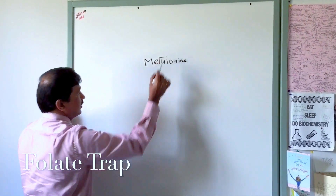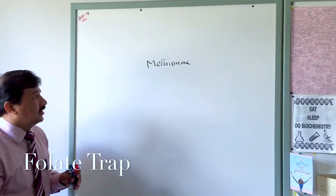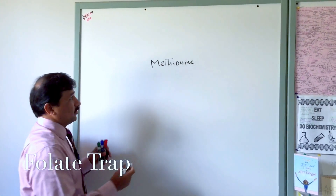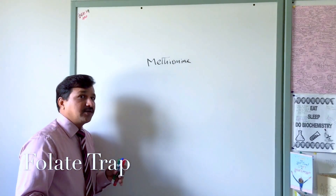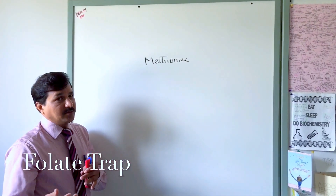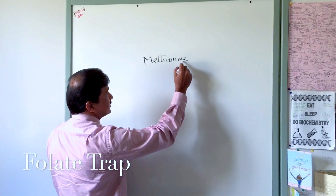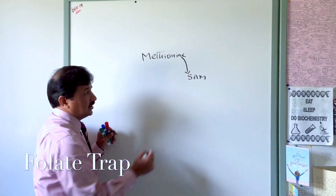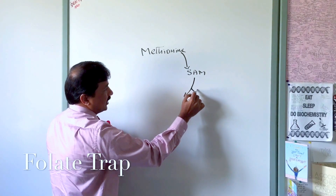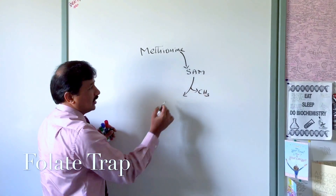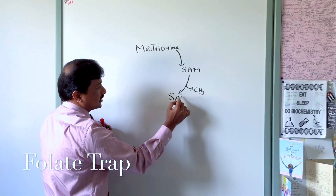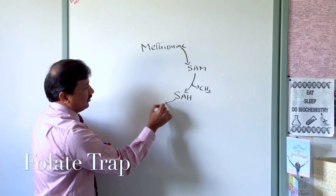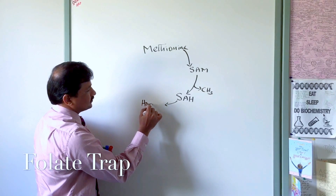We remember essential amino acids with 'PVT TIM HaLL,' and within that we have methionine. We consume methionine and it undergoes metabolism within our body — it will become part of a polypeptide chain, and also undergo other metabolic fates. One metabolic fate is that methionine is converted to S-adenosyl methionine (SAM), which participates in methylation reactions where a methyl group is donated.